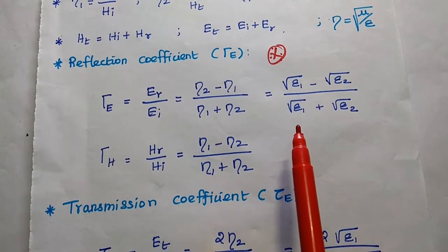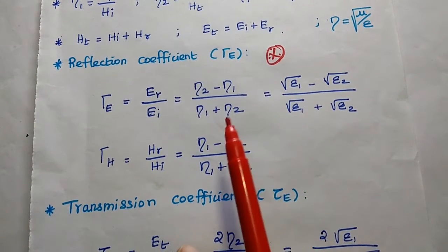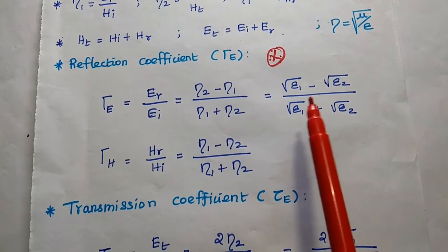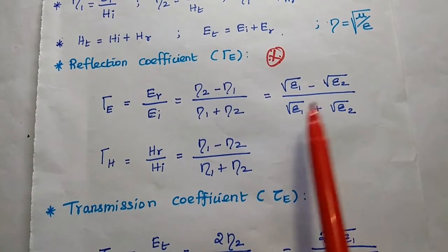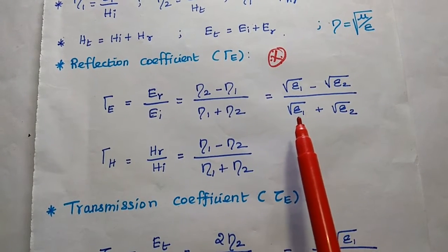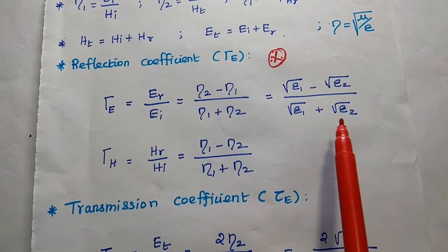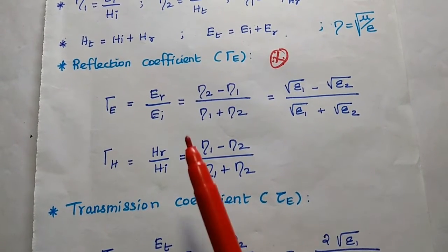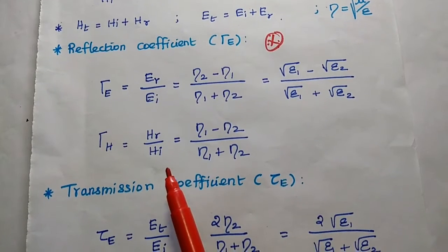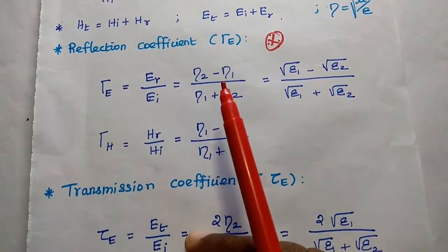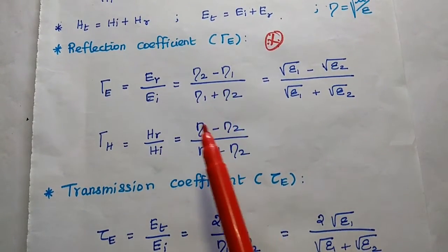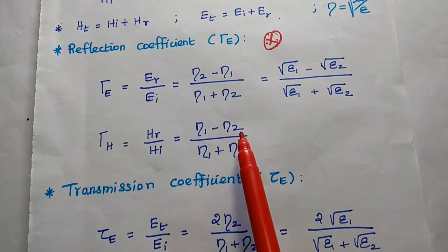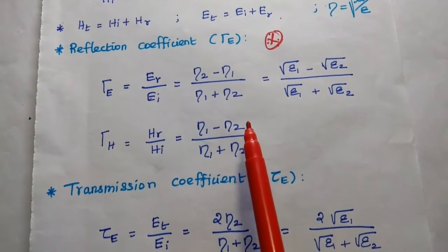In terms of permittivity, we can write the same expression as square root of epsilon 1 minus square root of epsilon 2 divided by square root of epsilon 1 plus epsilon 2. Similarly for the magnetic field, in the numerator we have the difference value eta 1 minus eta 2.